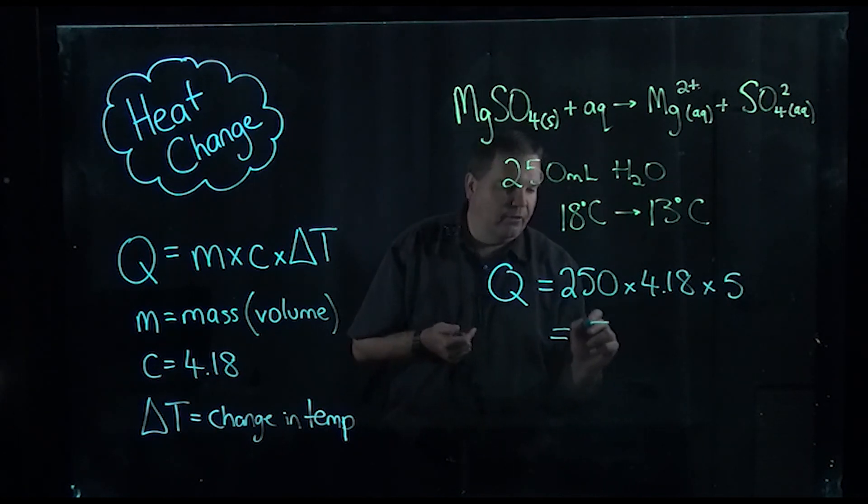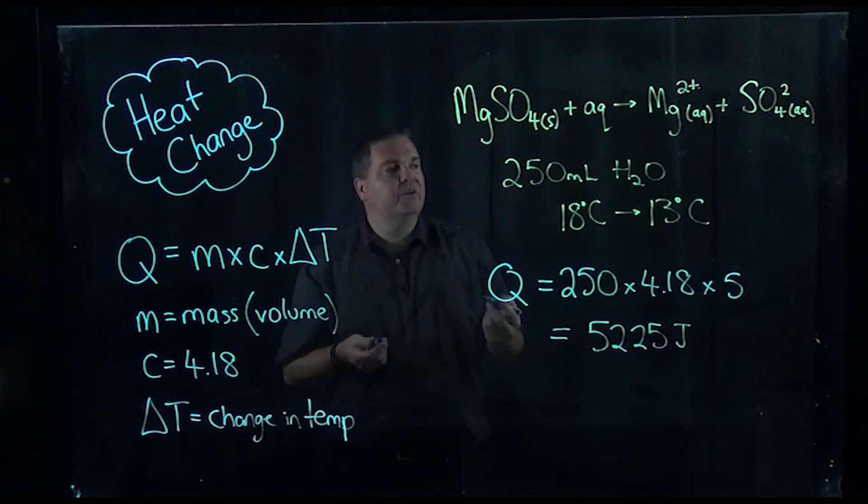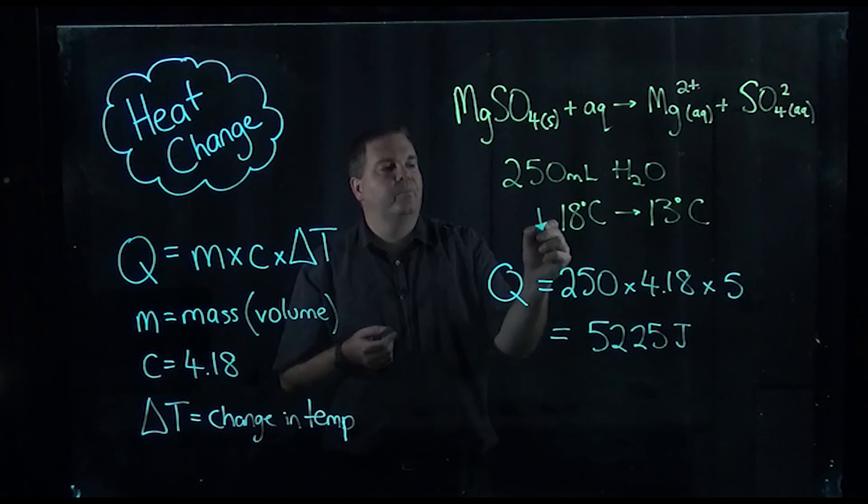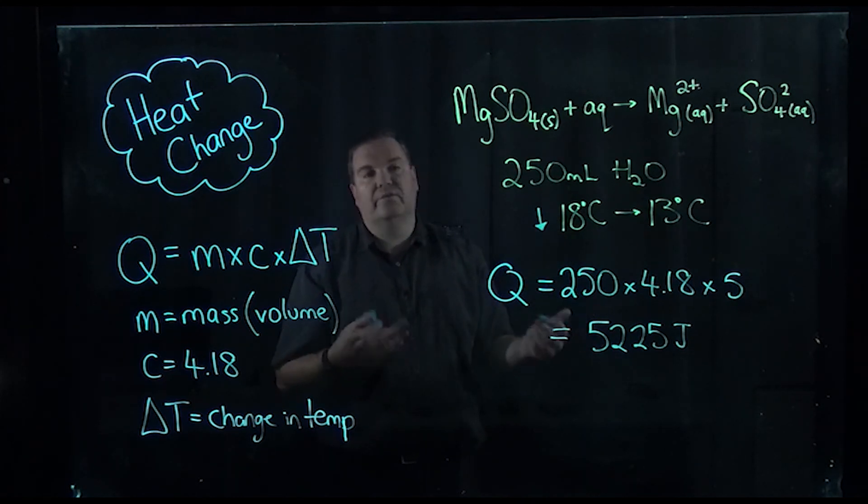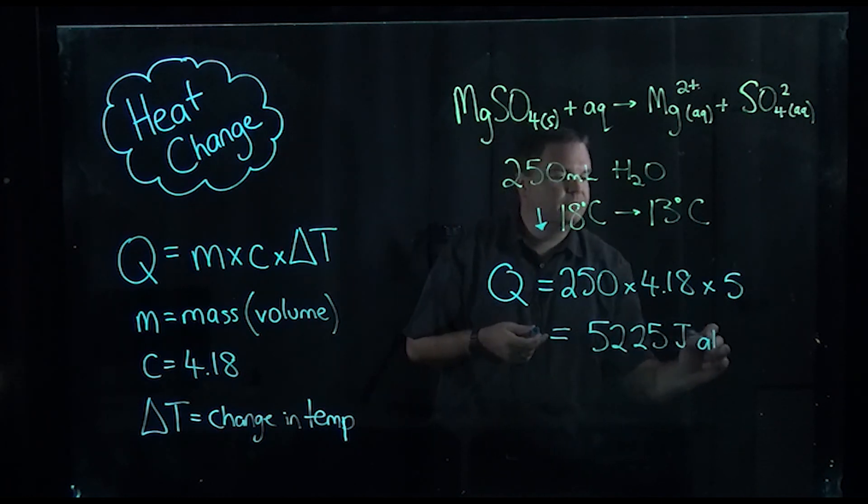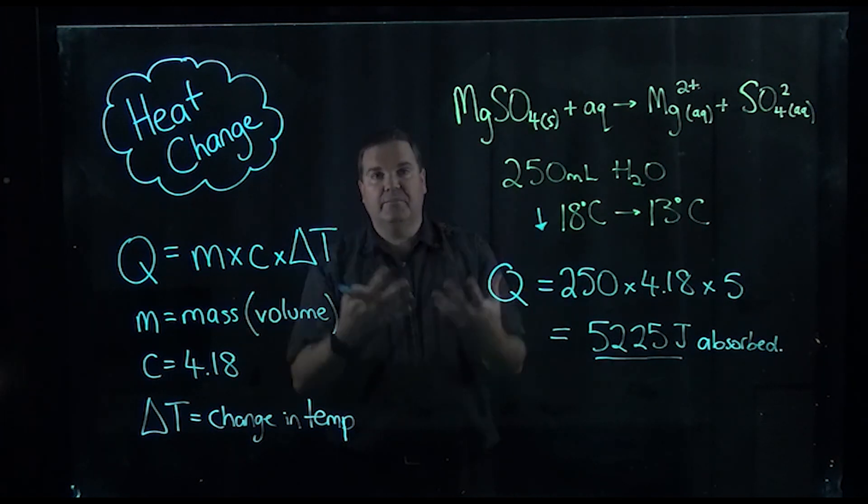So if we put all that in together we get a value of 5225 joules. Now for this one, because the temperature went down, energy is being absorbed. So in this case we would say there was 5225 joules absorbed, whereas in the last one it was released.